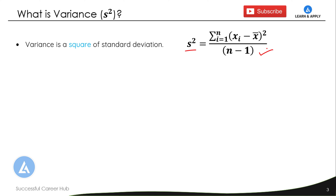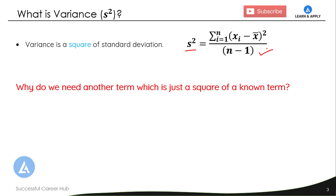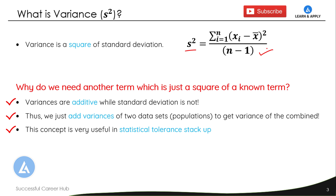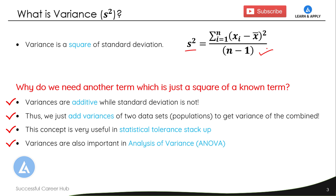The basic question that may be in your mind is: why do we need another term that is just a square of a known term? Here is the answer. Variances are additive while standard deviations are not. In other words, we can simply add the variances of two datasets or populations to get the variance of the combined dataset. This concept is very useful in statistical tolerance stack-up. Variances are also important in analysis of variance (ANOVA), which is an important hypothesis test used to compare the means of more than two samples. Now let's go into the detail.